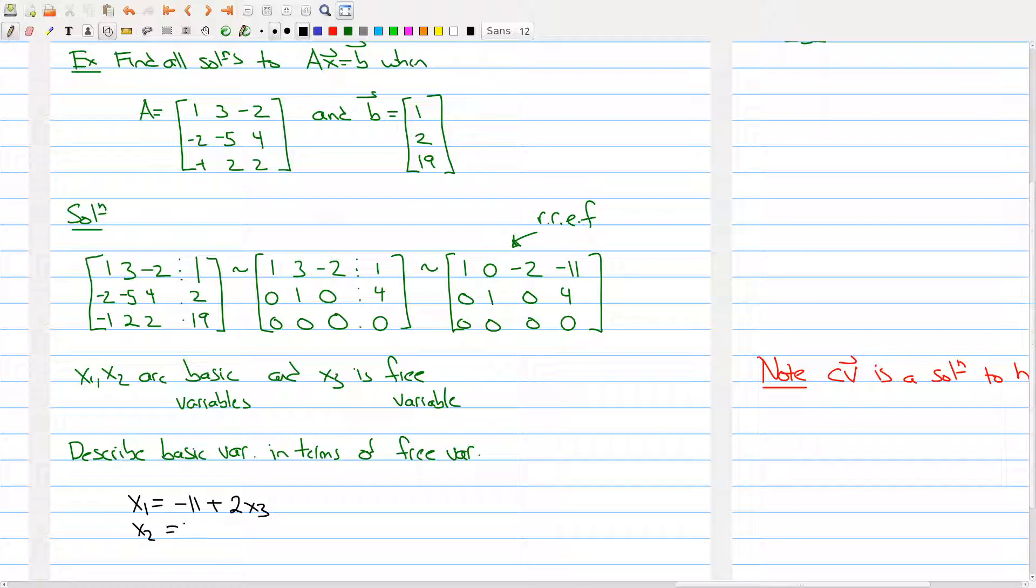What we have is x1 equals -11 plus 2x3, x2 is always equal to 4, and x3 is our free variable, so it's always equal to x3.